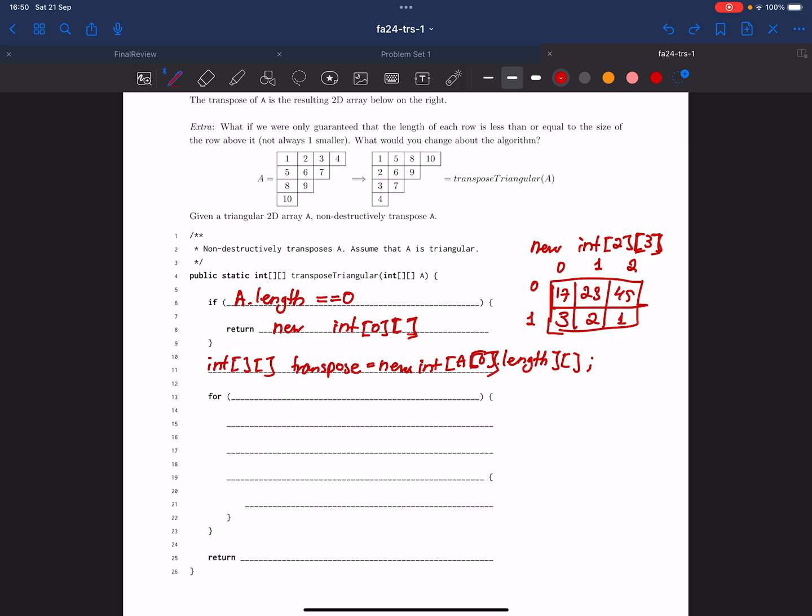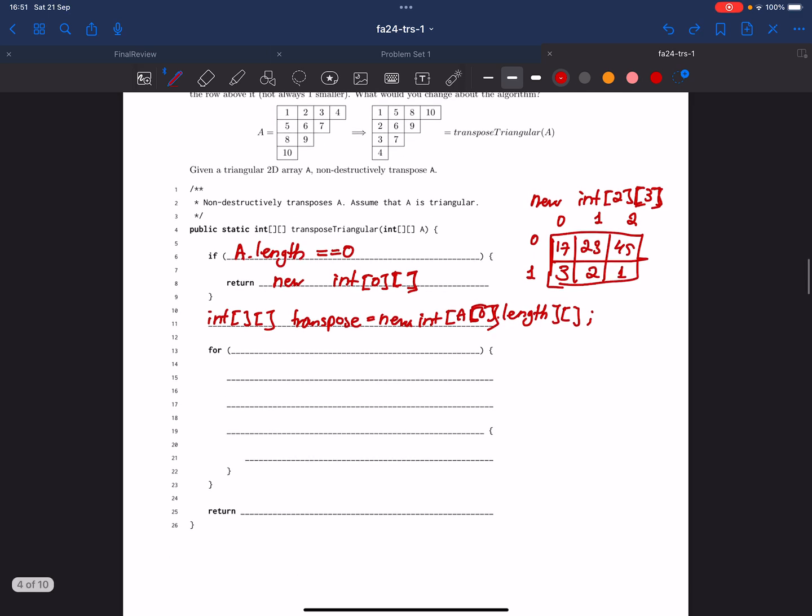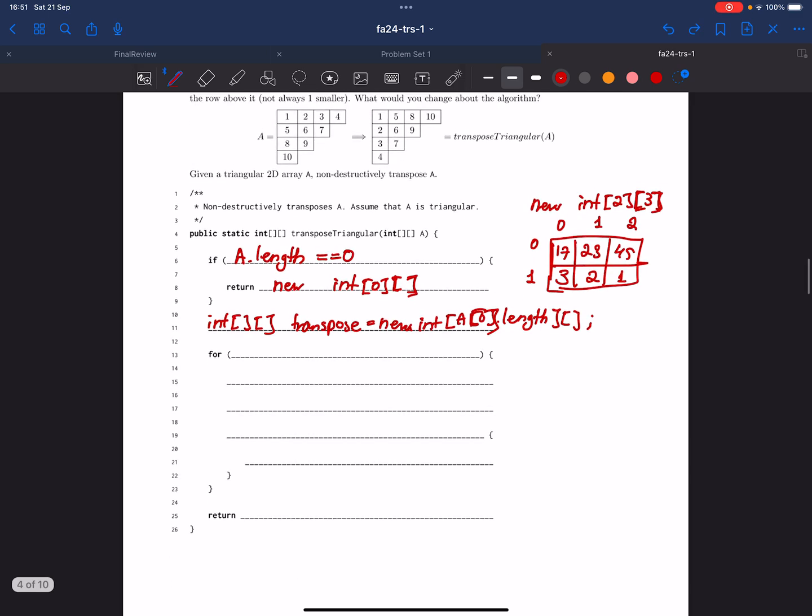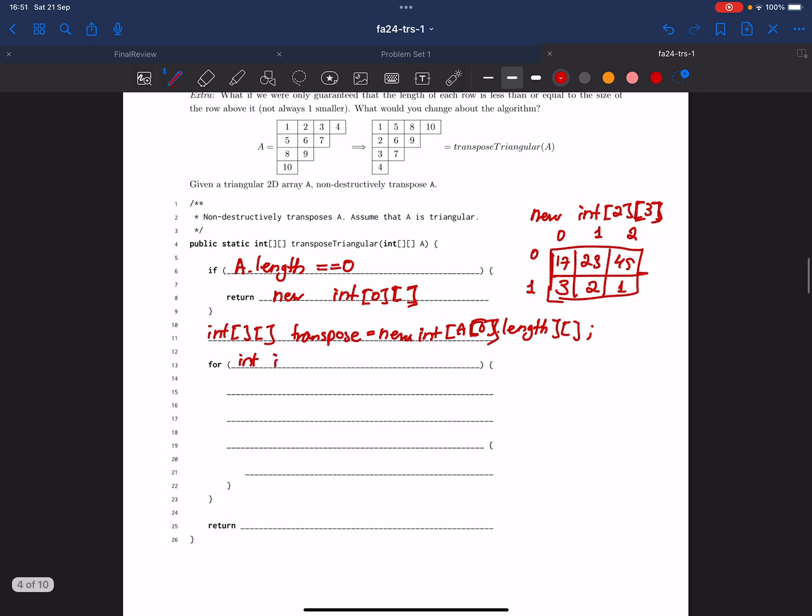In our for loop, we need to instantiate our new variable i because we actually need to change all of these values to their new coordinates, which can be done by using a double for loop. So i starts from zero, i is less than transpose.length, and i++.